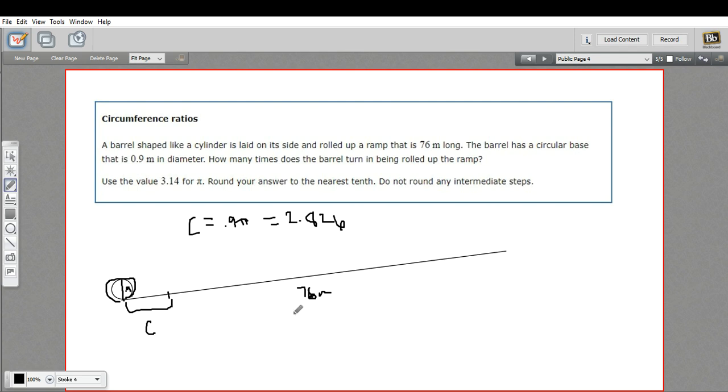So how many chunks of 2.826 fit in 76? We take 76 and divide it by 2.826. So 76 divided by 2.826. And we're supposed to round to the nearest tenth, so this is going to be 26.9 turns. So almost 27 turns of the barrel to get it up this long 76 meter ramp. That's a little word problem involving circumference.